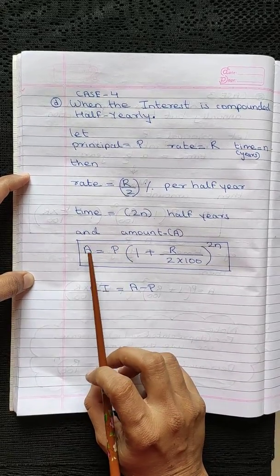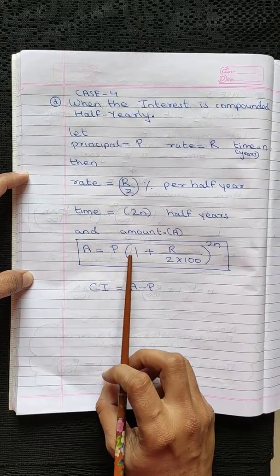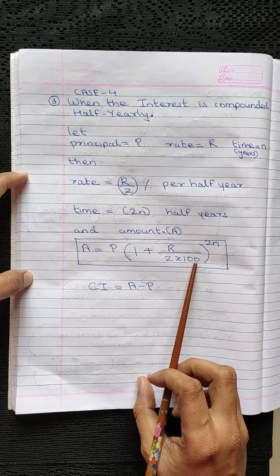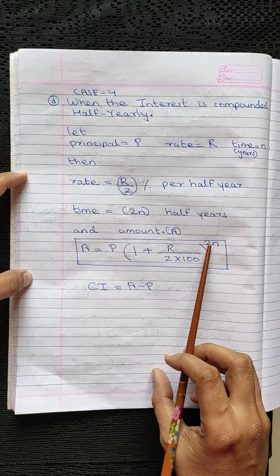So the formula becomes A equals P into 1 plus R upon 2 into 100 raised to the power 2N.